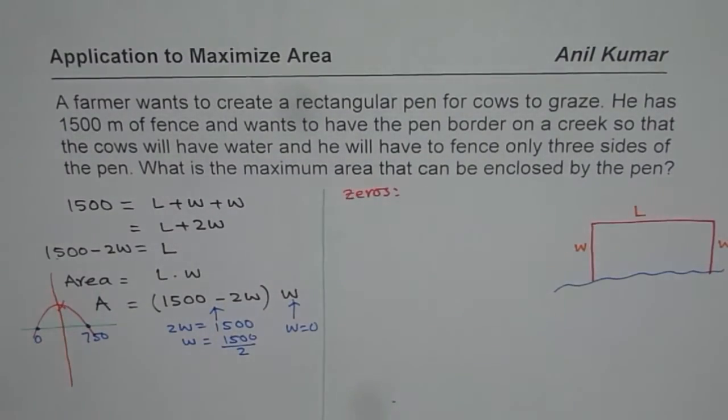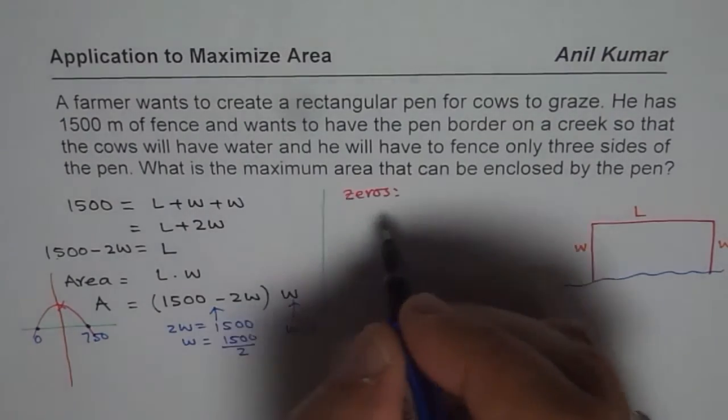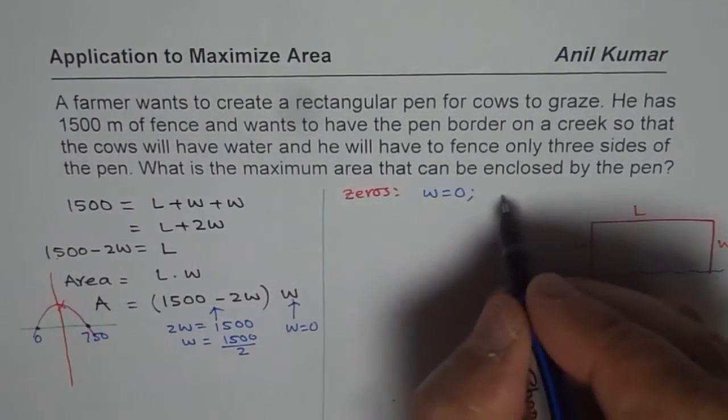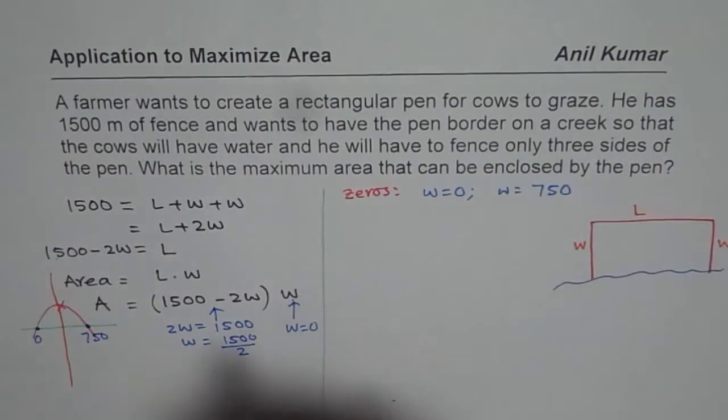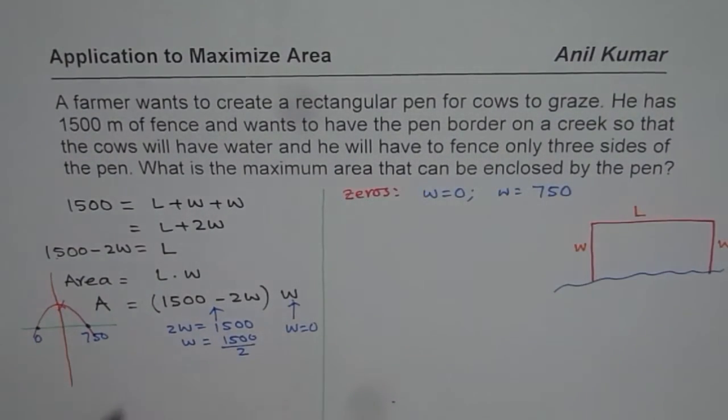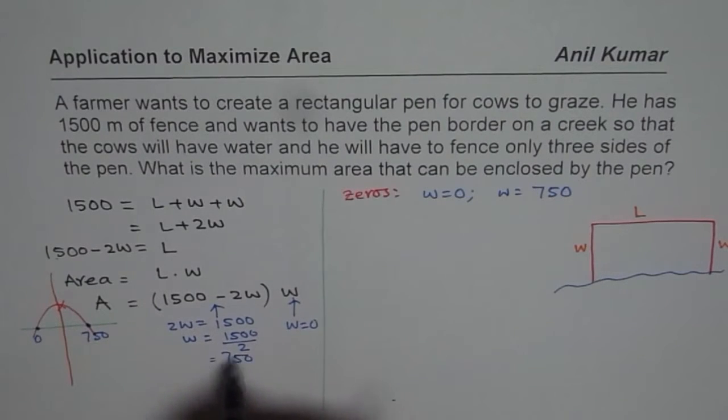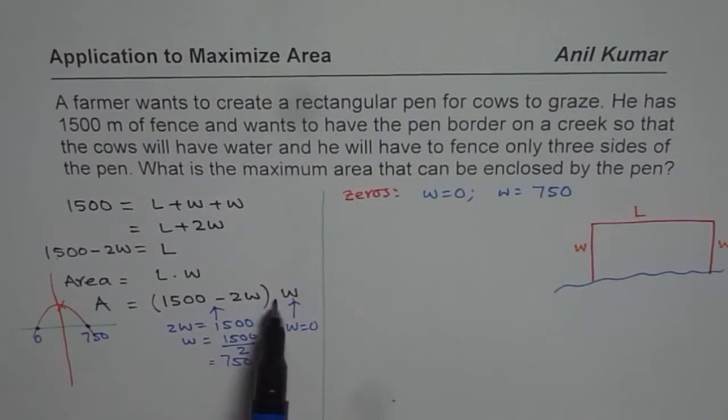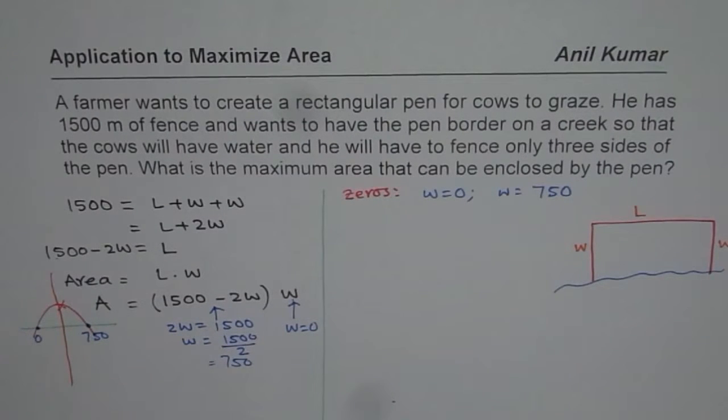So for us, the zeros are, as we found, one 0 is at W equals to 0. And the other one is at W equals to 750, which is 1,500 divided by 2. So let me write this as 750. How did we get these zeros? By equating each factor to 0. That is the first factor, that is the second factor.